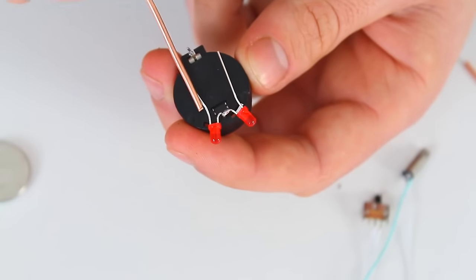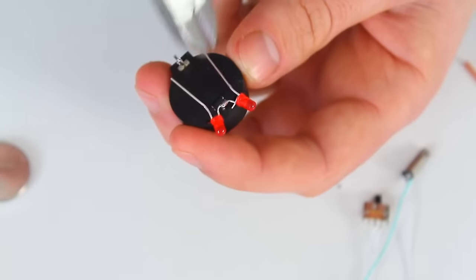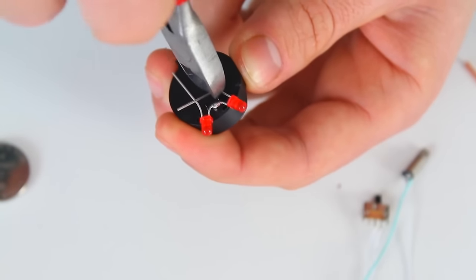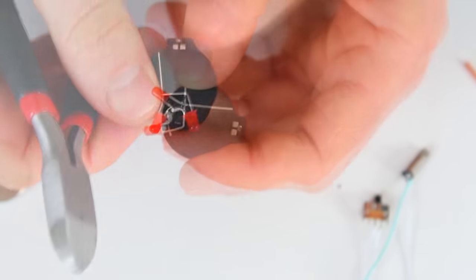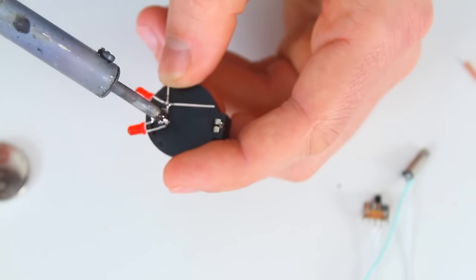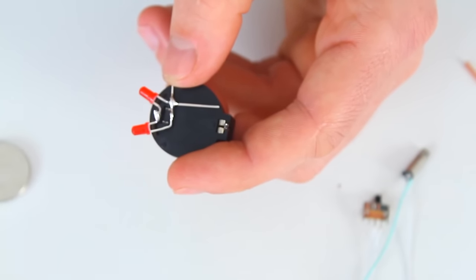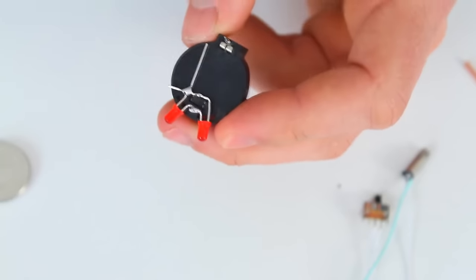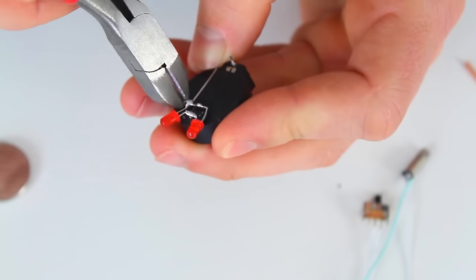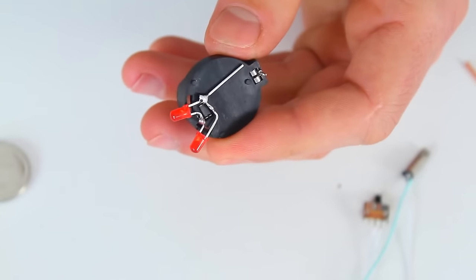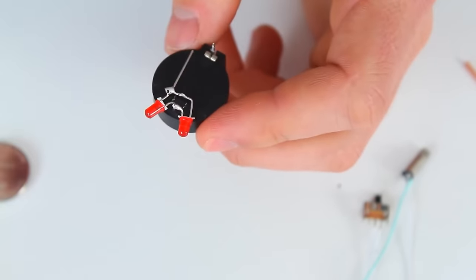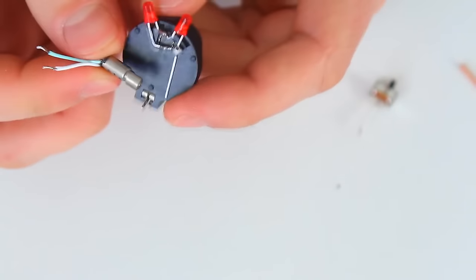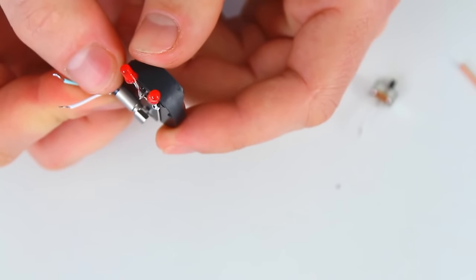We connect them together. Now, we glue our motor in the middle using our glue gun.